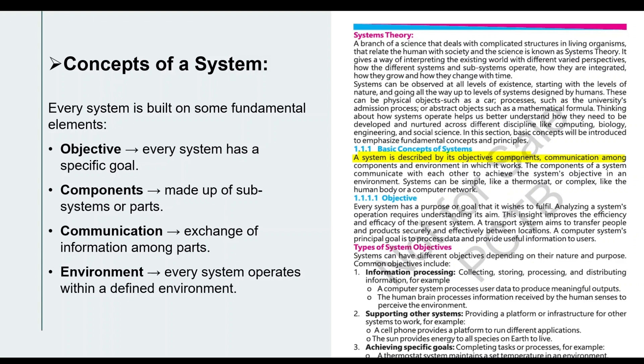We will cover examples - like the book mentions thermostat. Thermostat controls the temperature of a room. There are simple systems and also complex systems like human body or computer network.